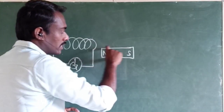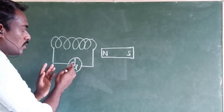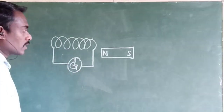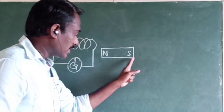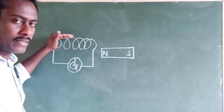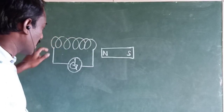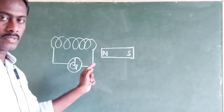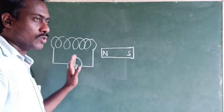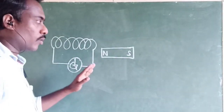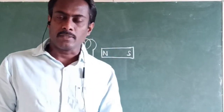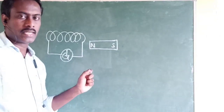When the north pole is slowly taken away from the coil, we will observe a deflection of the needle again, but in the opposite direction. This means that when a magnet is brought near a coil, the magnetic field induces a momentary current in the circuit. When the magnet is taken away, the same happens but in the opposite direction — a momentary current is induced.